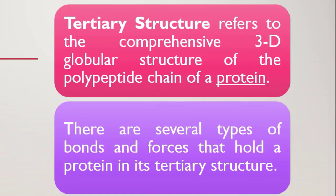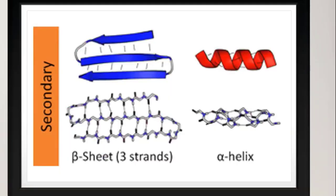Next, we have beta-pleated sheets. This structure is formed by the folding back of the polypeptide chain and is also stabilized by hydrogen bonds between polypeptide units. Here we can see alpha helix and beta-pleated sheets.